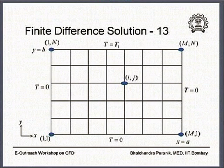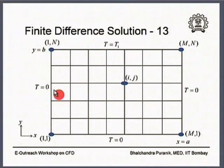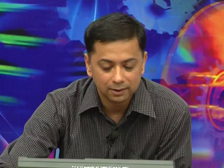You initiate a solution which can be a rough guess altogether. For example, in this case what you can do is our problem setting is 0, 0, 0 and T1. So you can choose to initialize the entire domain as T equal to 0, or you can choose to initialize the domain with a temperature of T1 plus 0 divided by 2, so T1 over 2. Typically you will see that irrespective of the initial guess, these iterations converge.